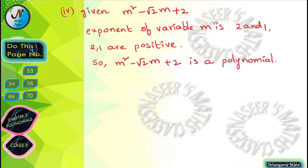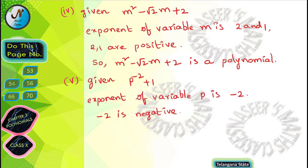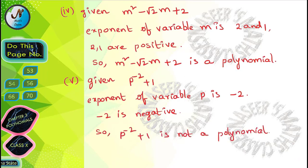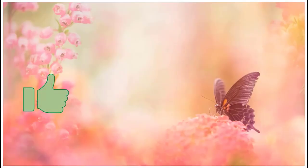Next fifth one, given expression is p⁻² + 1. Here the exponent of variable p is -2. Here -2 is a negative number. That's why the expression p⁻² + 1 is not a polynomial.